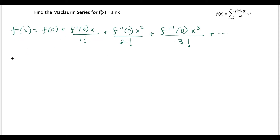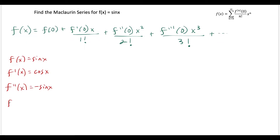If we expand this, this is going to be f of 0 plus the first derivative at 0 times x to the first over 1 factorial, plus the second derivative at 0 times x squared over 2 factorial, and this pattern continues. So for these questions, we start with f of x equals sin x and keep finding derivatives until we notice a pattern. The first derivative is cosine x, the second derivative is negative sine x, the third derivative is negative cosine x, and the fourth derivative brings us back to sine x — so the pattern repeats every four terms.